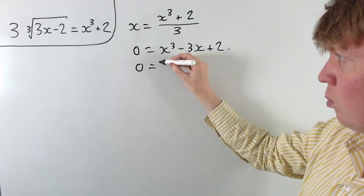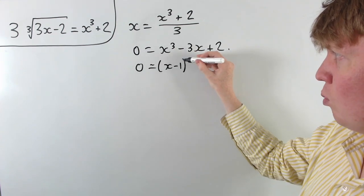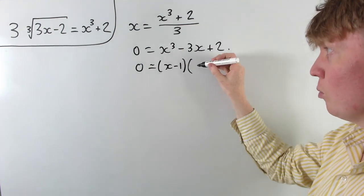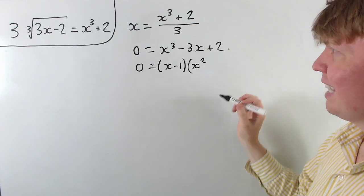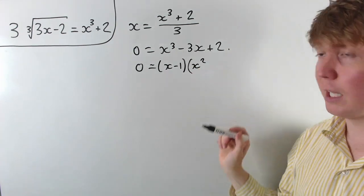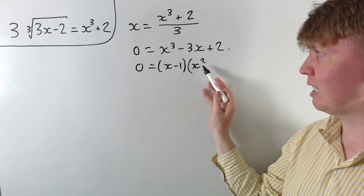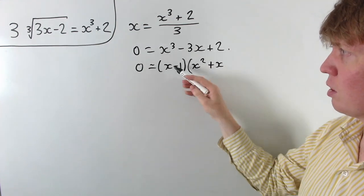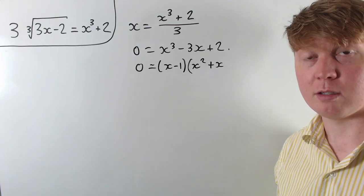So then x equals 1 is a solution, which means x minus 1 is a factor, and then our quadratic factor then, first of all we need to get x cubed, so we need to multiply x by x squared. But then we don't want any x squared terms, we've got at the moment negative x squared, so we need to add in another x, so then we get a positive x squared, which cancels that.